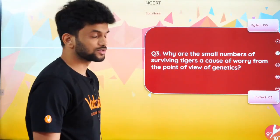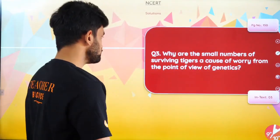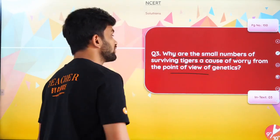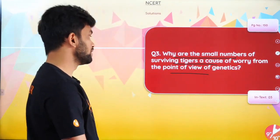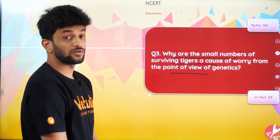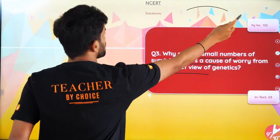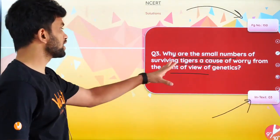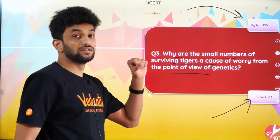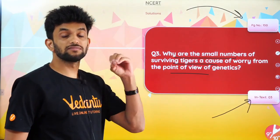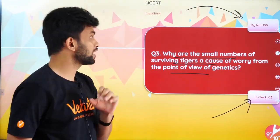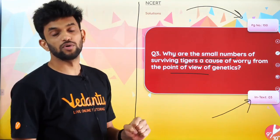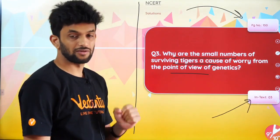Page number 150, in-text question number three: 'Why are small numbers of surviving tigers a cause of worry from the point of view of genetics?' When a tiger's number is reduced, why are they a cause of concern from a genetics perspective?